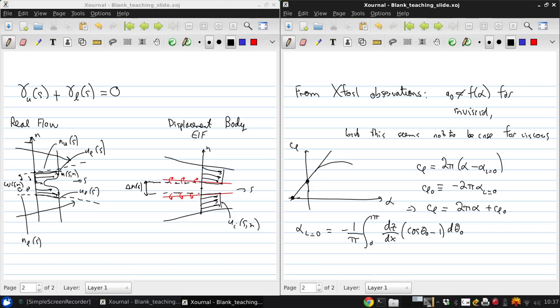Here, dz/dx is the local camber line slope at θ₀, and θ₀ is defined by the transformation x = c/2(1 - cos(θ₀)). This is just defined for mathematics and we use it to make this integral easier to evaluate.